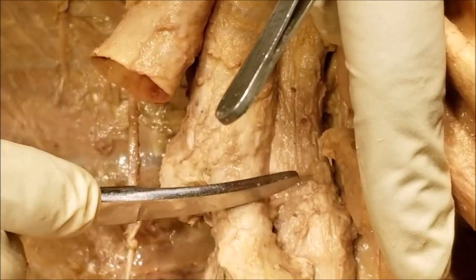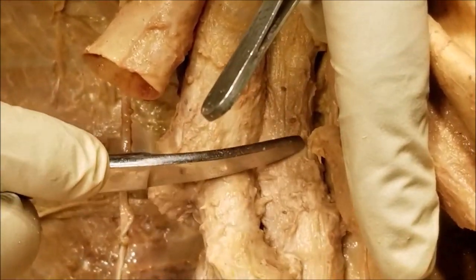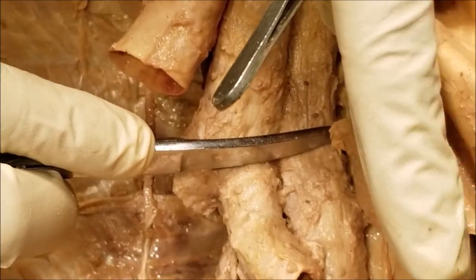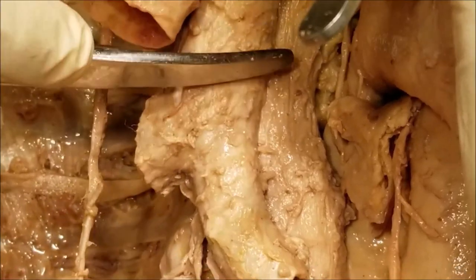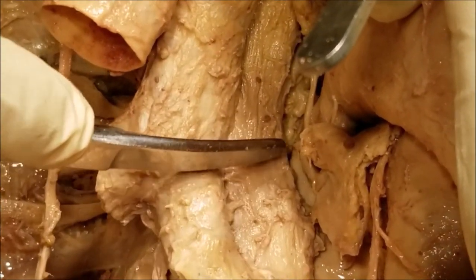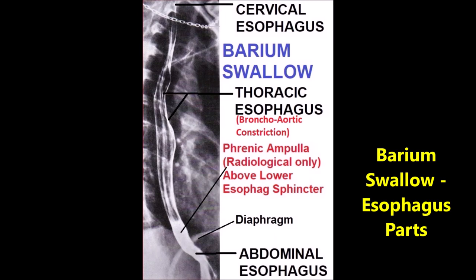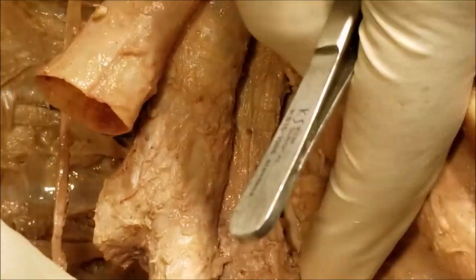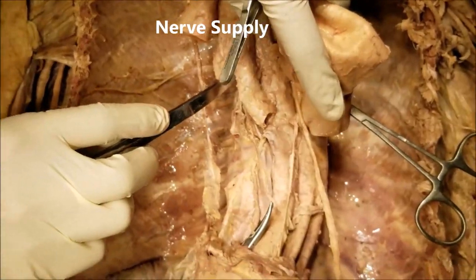These two constrictions at 22.5 and 27.5 centimeters are collectively rounded off to approximately 25 centimeters from the incisor teeth. The lateral compression is best seen in an anteroposterior barium swallow, and the anterior compression is best seen in a lateral barium swallow. A barium swallow is shown here to demonstrate the constrictions and the three parts of the esophagus.